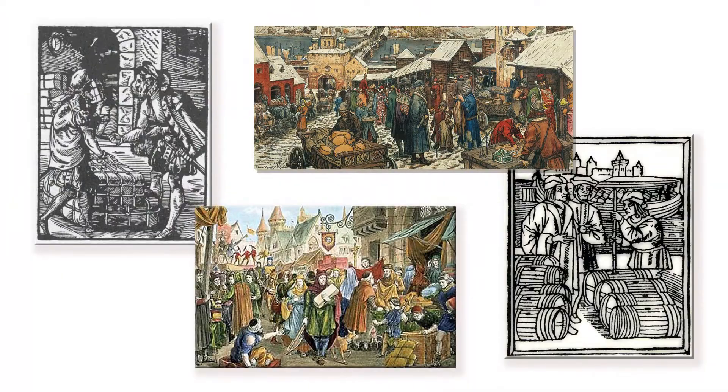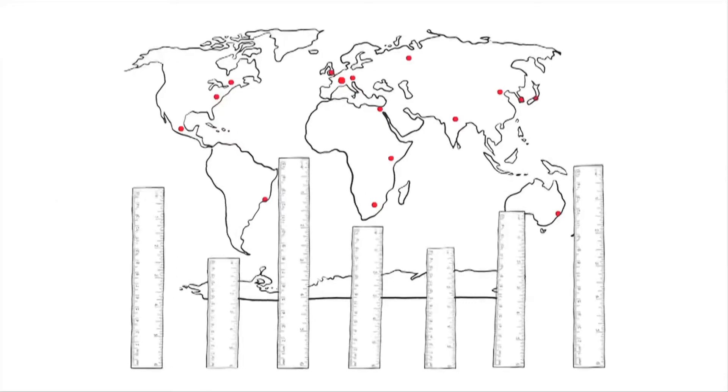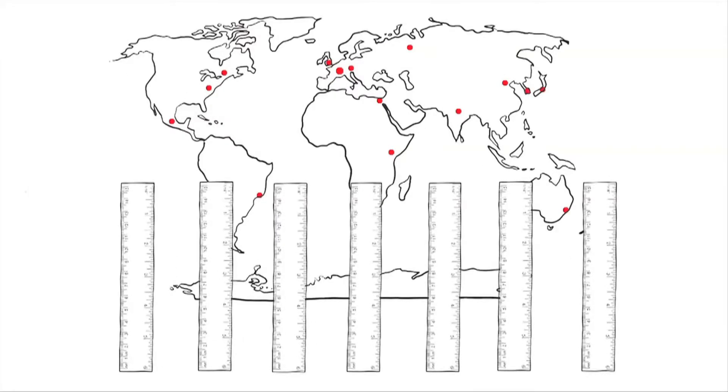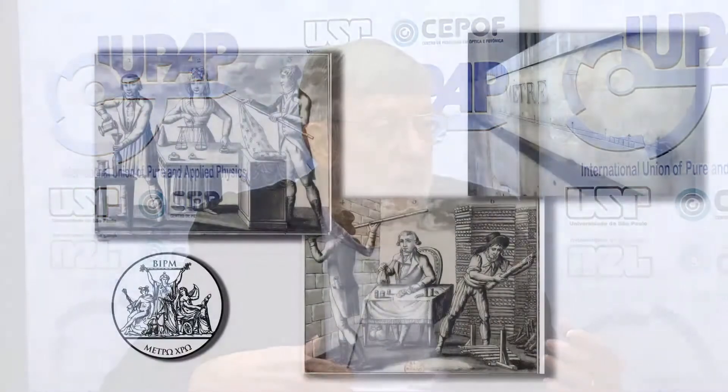In medieval times, each town might have its unit of length set into stone in the town square, so all the transactions in that town would be uniform with respect to measures of length. But as trade increased across distances and as science became more sophisticated, it was absolutely necessary to have units that were universal. And so, around the time of the French Revolution, one of the big changes in metrology happened — the beginning of what we call the metric system.